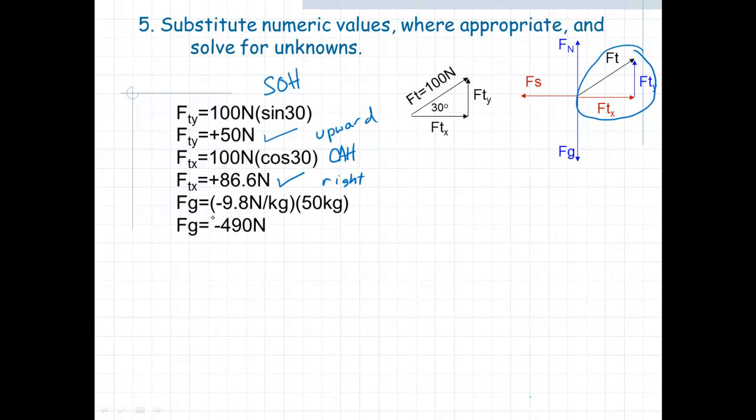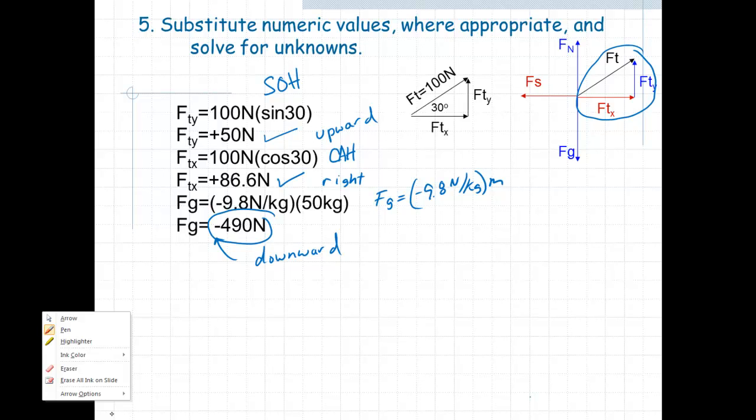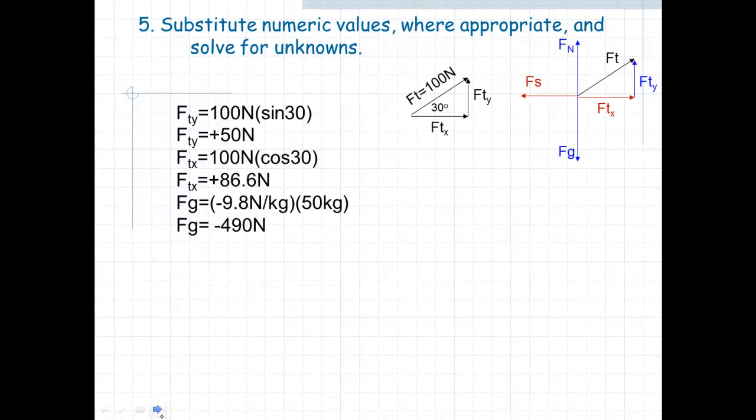Now FG, we know from the equation from before, that FG is equal to negative 9.8 Newton's per kilogram, or meters per second squared, times the mass. So that's where we get the equation of negative 490 Newton. It's negative because it is pointing downward. Okay, so let's do this now. Let's erase all this ink and let's go on to the next part.